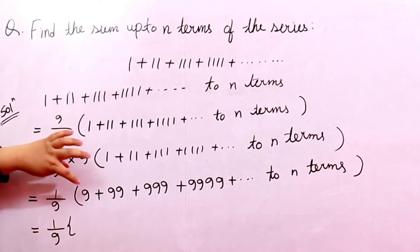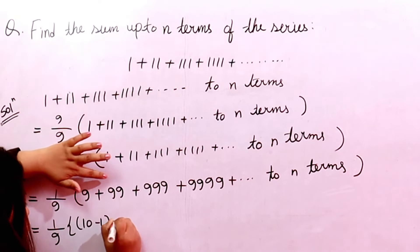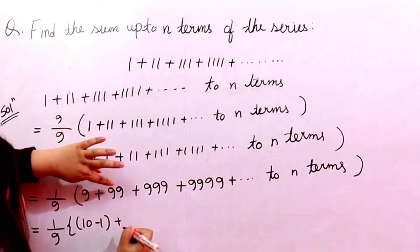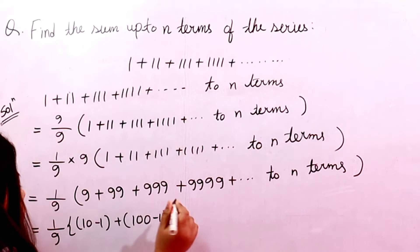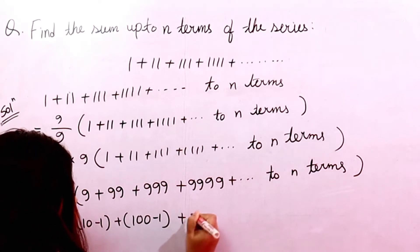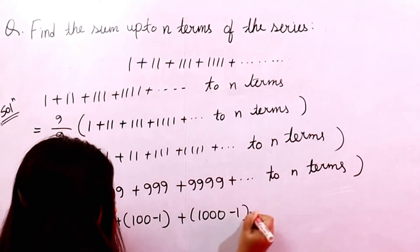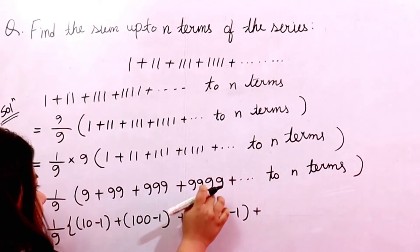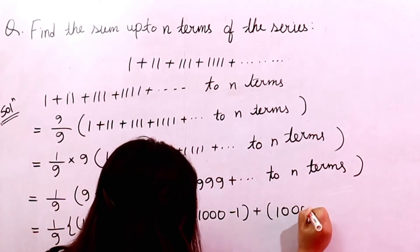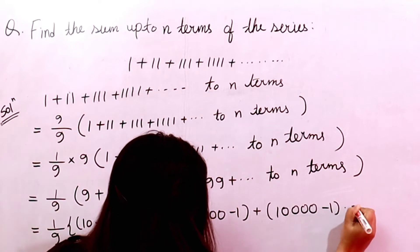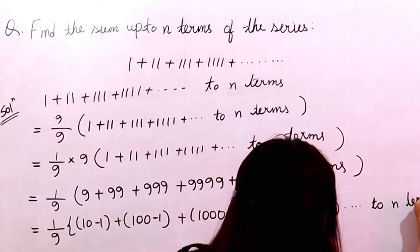Now we rewrite each term: 9 can be written as 10 − 1, 99 can be written as 100 − 1, 999 can be written as 1000 − 1, and 9999 can be written as 10000 − 1, continuing up to n terms.